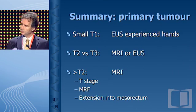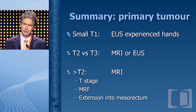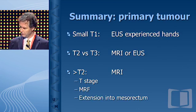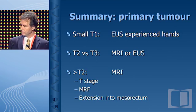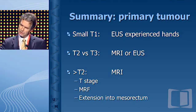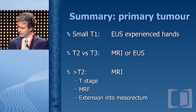For primary staging of the primary tumor in small T1 tumors, EUS is very good, but you need experience. For T2 versus T3, MRI or EUS do equally well, but for everything that's a little bigger, MRI is the best staging tool.